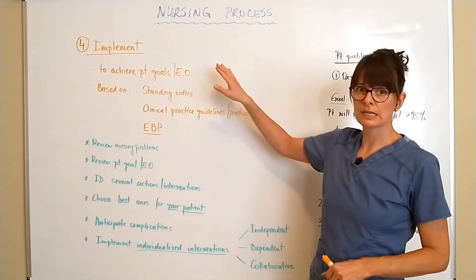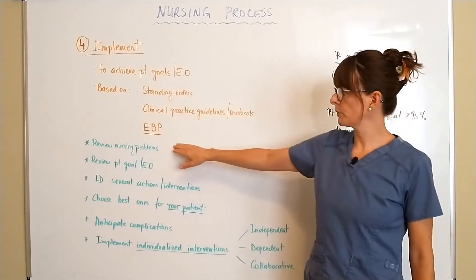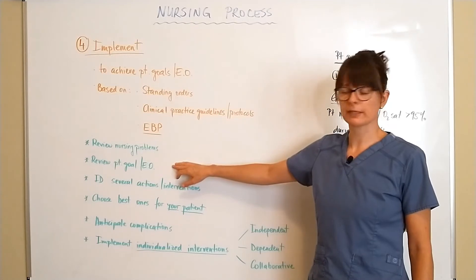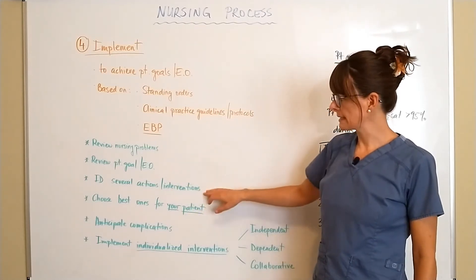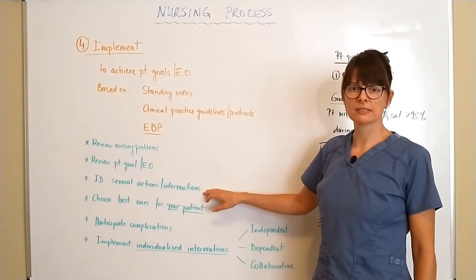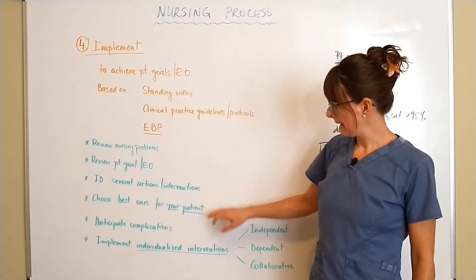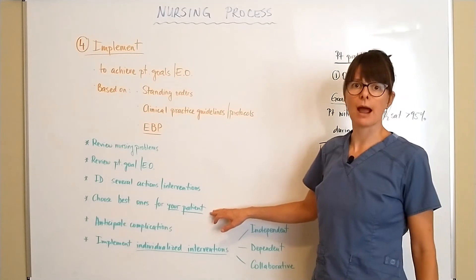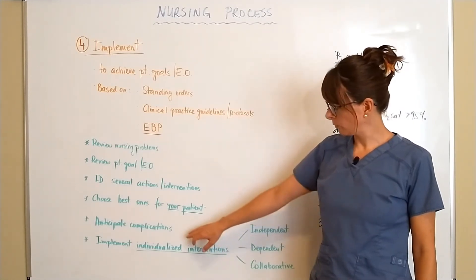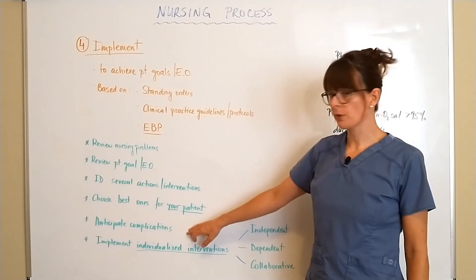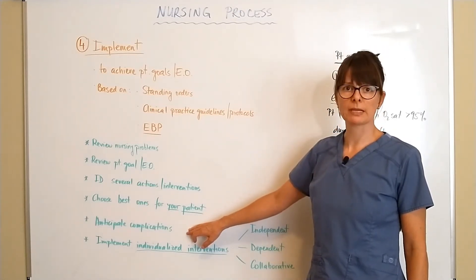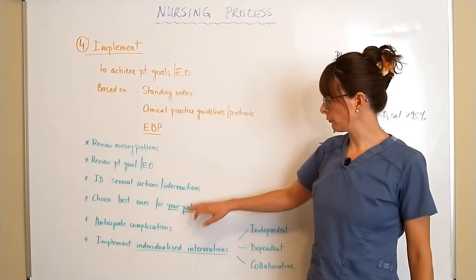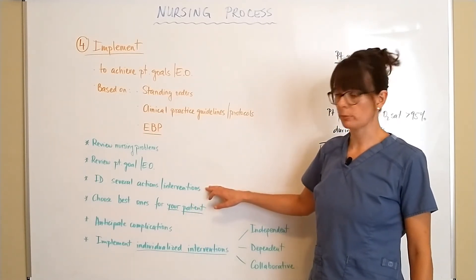Before we go into the interventions, we review the nursing problems we have identified as well as the patient goals and expected outcomes. We identify several actions and interventions that might benefit our patients and choose the best ones that will particularly help the patient get better. We also have to use our critical thinking to anticipate complications and build those into the interventions we'll be taking.